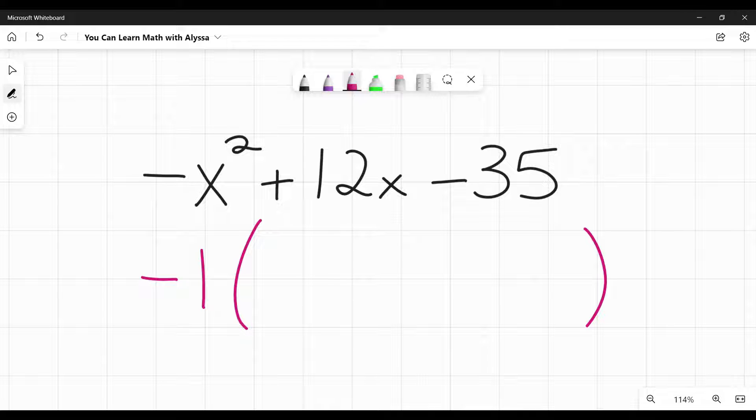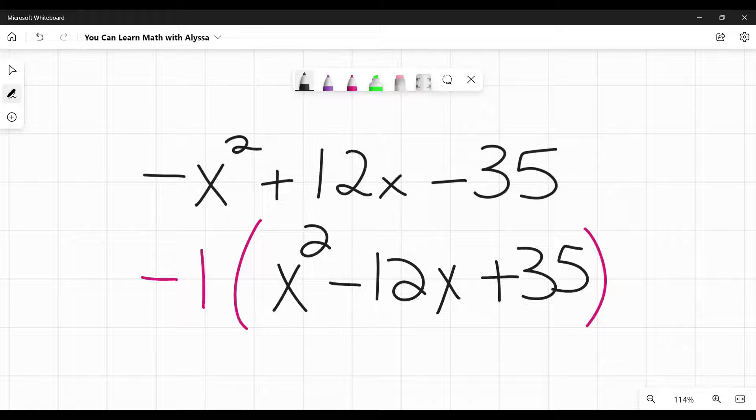This will change or flip the sign of every term in that quadratic. In this case, negative x squared becomes positive x squared, plus 12x becomes negative 12x, and negative 35 becomes positive 35.